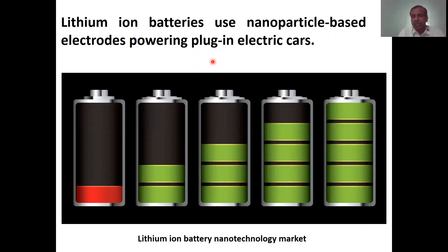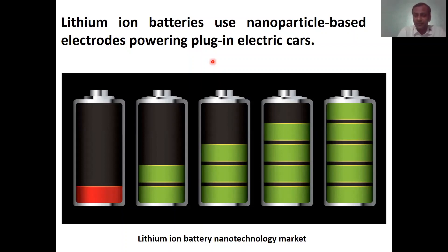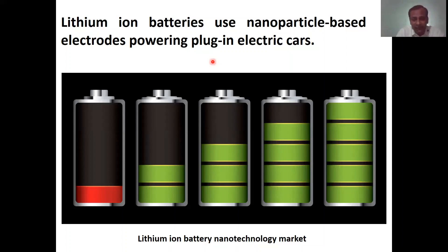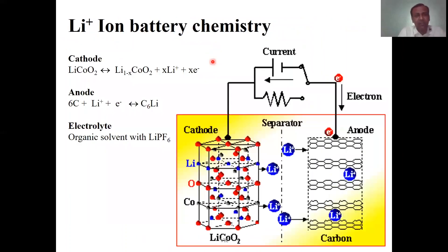In lithium-ion batteries, the charging and discharging cycles are very large. As per scientific reports, a lithium-ion battery can run approximately 20,000 cycles, meaning we can use a single battery for at least 20 years, while conventional batteries have to be changed after three or four years. The second advantage is very fast charging, and the third advantage is a much longer lifetime.